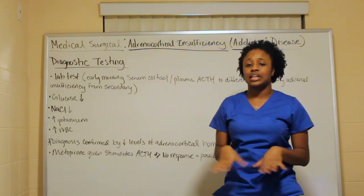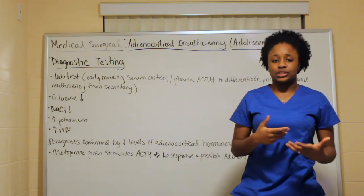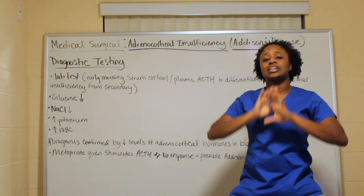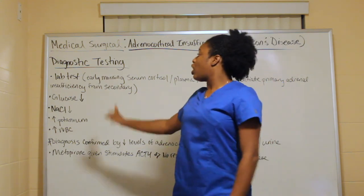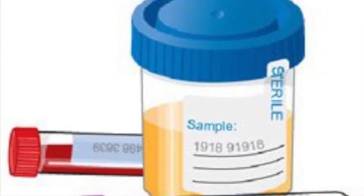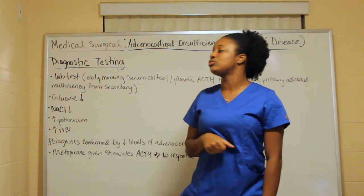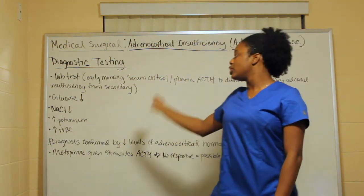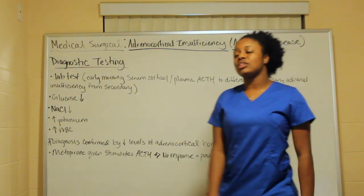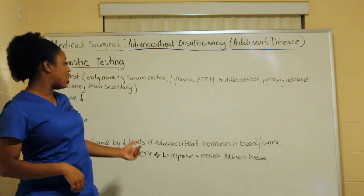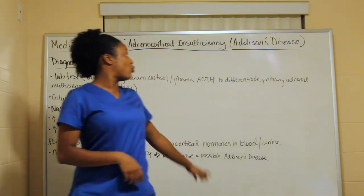Primary Addison's disease occurs when damage happens to the adrenal gland itself; secondary is when outside factors affect the adrenal gland. Lab findings in Addison's disease mirror the signs and symptoms: decreased glucose, decreased sodium, increased potassium, increased white blood cell count. Diagnosis is confirmed by decreased levels of adrenal cortical hormones in the bloodstream or urine.